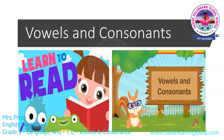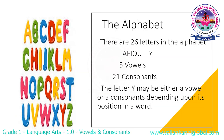Good day children, today we are going to learn about vowels and consonants. What are vowels and consonants? There are 26 letters in the family of the alphabet. A, E, I, O, U, and Y — five vowels and 21 consonants. The letter Y may be neither a vowel nor a consonant depending on its position in the word.